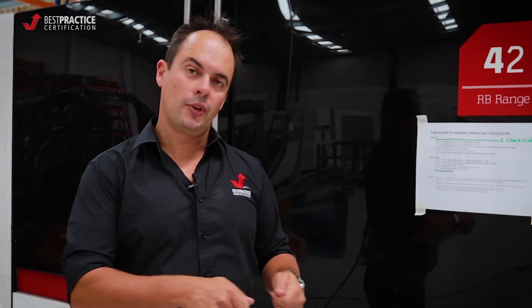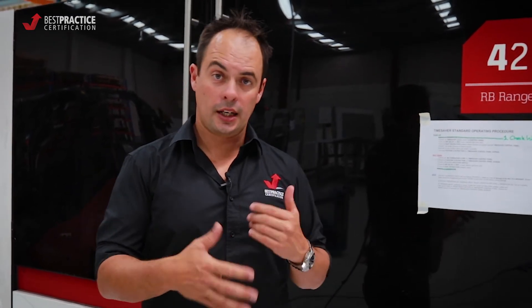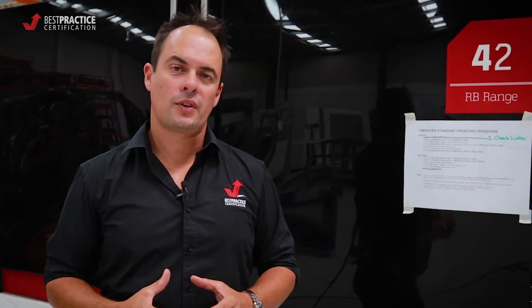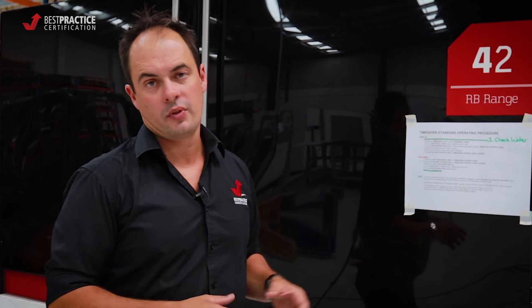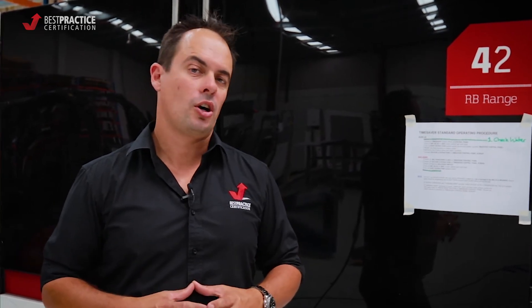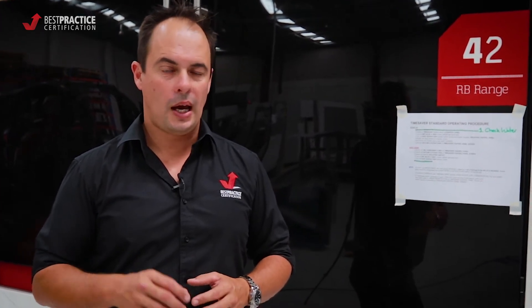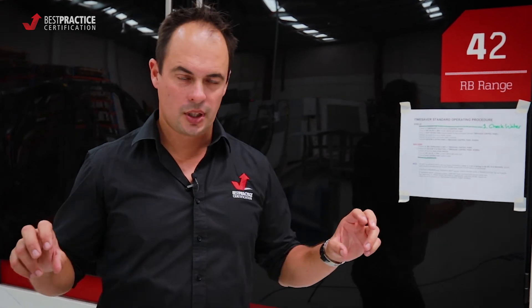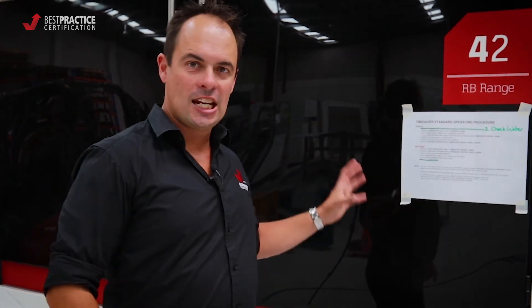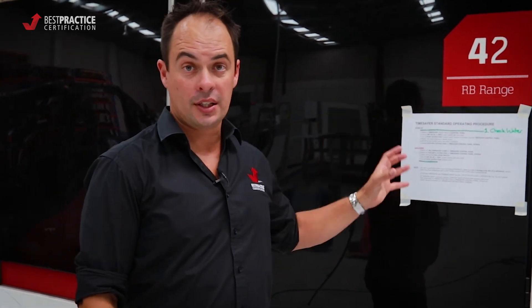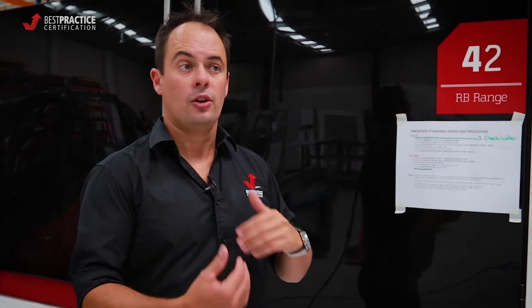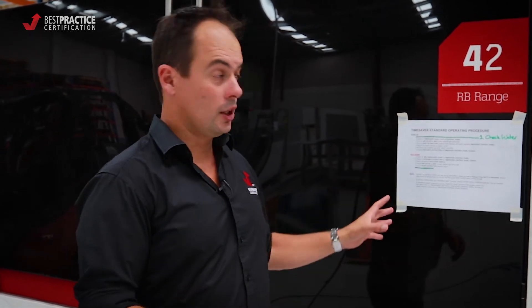All that happens now is people feed the parts in one end, they get cleaned up and sent out the other end. Instead of having a procedure and a specification or a lot of documents about how to do a task, we purchase a piece of equipment. If you look at the hierarchy of control, administration, policies, and procedures are at the bottom. This is an engineering solution to the management of risk — the risk being non-compliant parts in the process. It's a really good example of minimising documentation with an engineering solution.